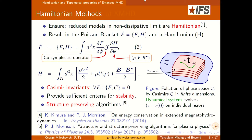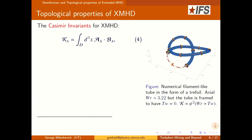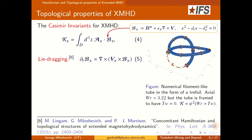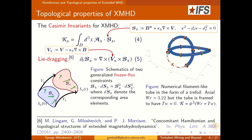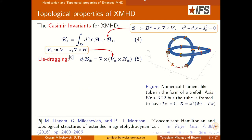The Casimir invariants for extended MHD turn out to be these expressions, which look very similar to A·B in MHD but are more general. B-plus-minus is defined using B-star and the vorticity, and A is basically the uncurl of B. There are two solutions from a quadratic equation. Another property the two-fluid model has is the Lie-dragging of two generalized magnetic fields — for physics people this is known as flux freezing, familiar from MHD. If you're interested in topological properties of extended MHD, we have a paper on this topic.